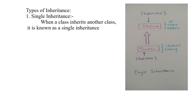The first type is single inheritance. When a class inherits another class, it is known as single inheritance. For example, every student has an id, name, and address. Every teacher also has id, name, and address, but the extra thing that teacher has is salary. So the teacher inherits the properties of id, name, and address from student and adds its own property salary. Therefore, teacher becomes the subclass and student becomes the superclass. This is an example of single inheritance.